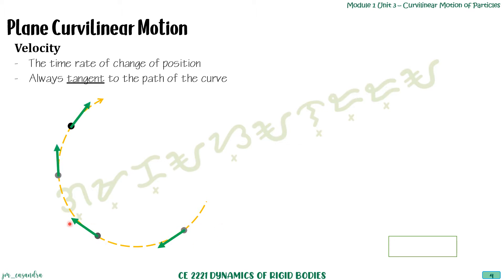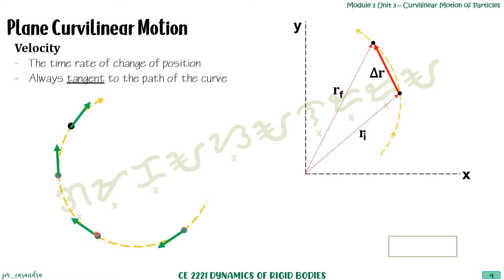All of the velocities at each point are all tangent to the curve. Given our previous diagram showing R initial, R final, and delta R, from point 1 to point 2 the particle travels for a certain time. We can write that V = dR/dt = Ṙ, meaning V is the first derivative of R.